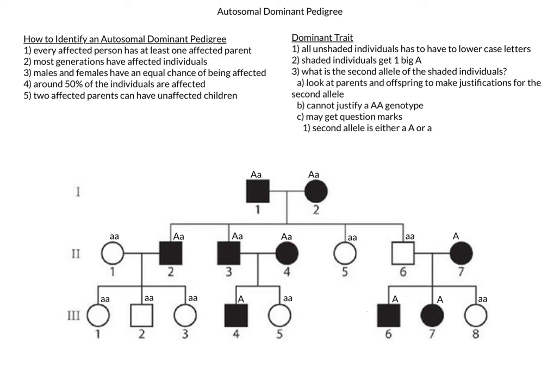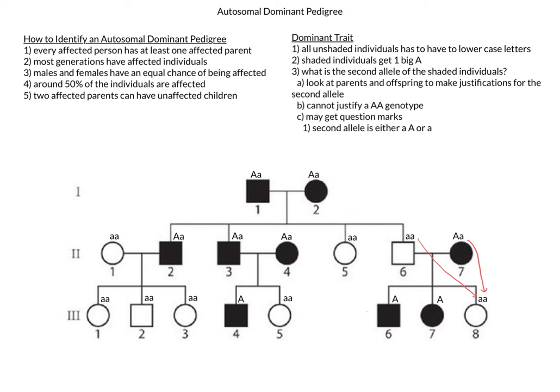On to individual 2-7. Here we have no parental information, so let's look at the kids. We again have a child that is homozygous recessive, and again this child would have to have received a recessive allele from both parents. As such, individual 2-7, the mother in this case, would have to be heterozygous in order to be able to donate the recessive allele while also displaying the trait.